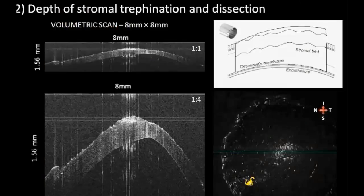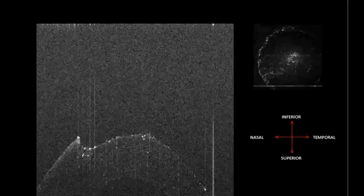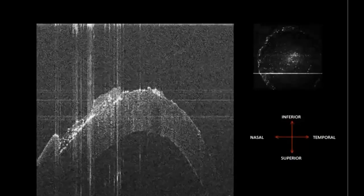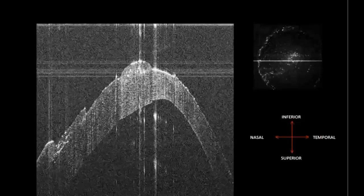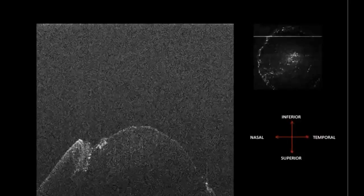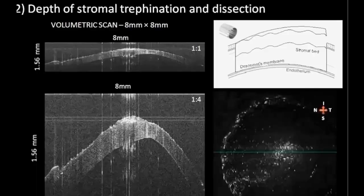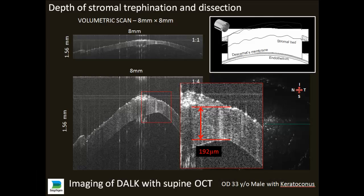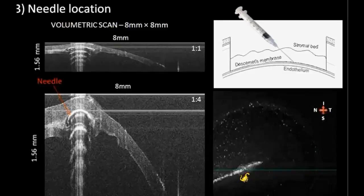In the DALK surgery, we perform partial thickness trepanation. This is after partial thickness trepanation, and here you can see that we still have a fair amount of stroma left behind before we're left with Descemet's membrane and endothelium only. Here we have the scan, and at high magnification I can see I still have 192 microns left before I hit the Descemet's membrane.